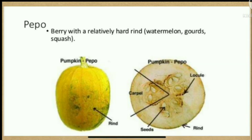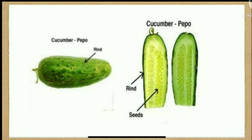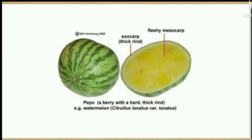Pepo: the berry with a relatively hard rind. Examples include watermelon, gourd, and squash. This is the image showing cross-section of pumpkin, dissection of cucumber, and dissection of watermelon.